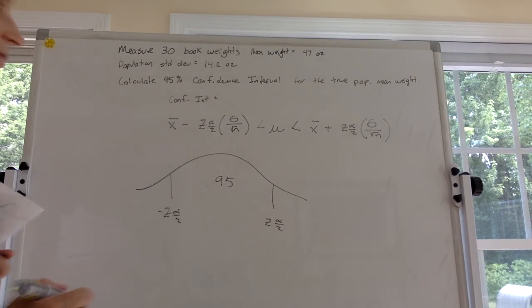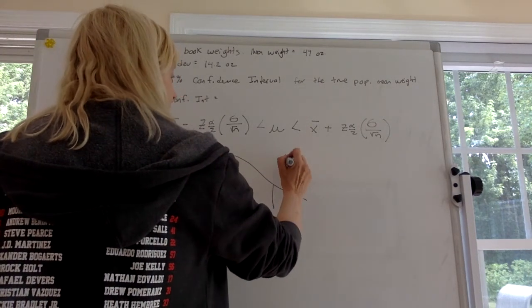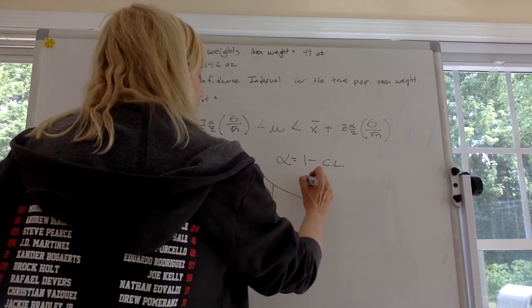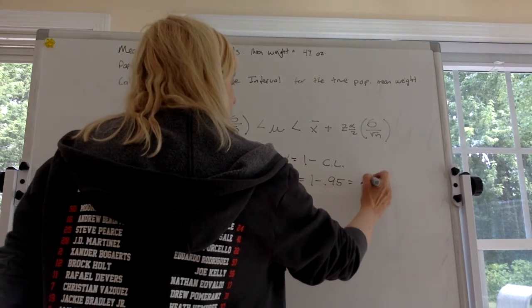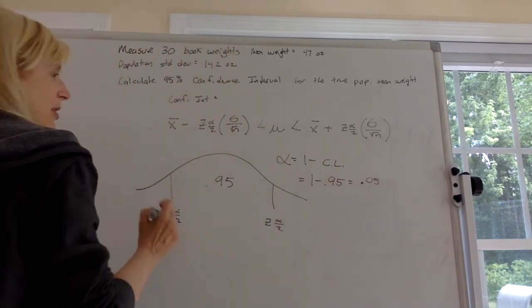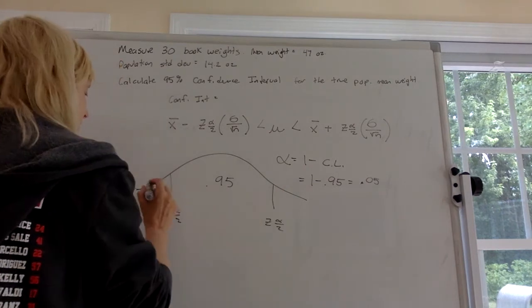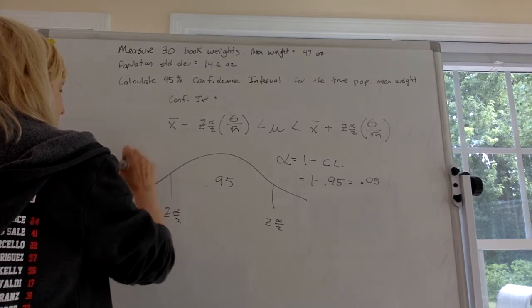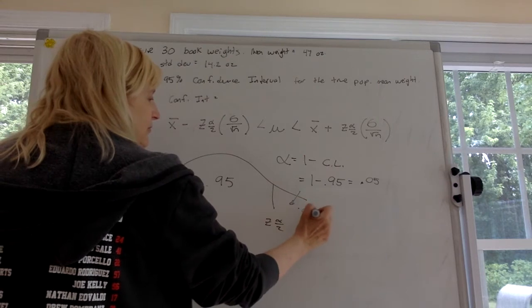Remember how you find alpha? Alpha is equal to 1 minus the confidence level. So in this case it's 1 minus 0.95, so it's 0.05. But you got to divide it in 2 because half of the alpha is over here, half is over there. So this is basically 0.05 divided by 2 which equals 0.025. This is also equal to 0.025.